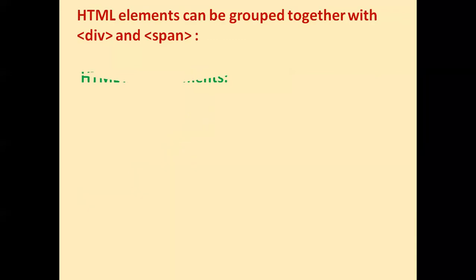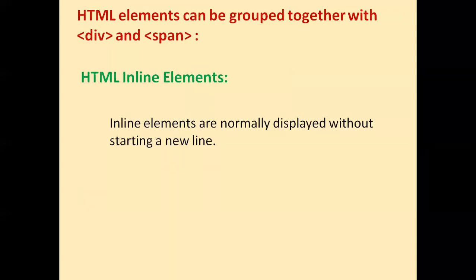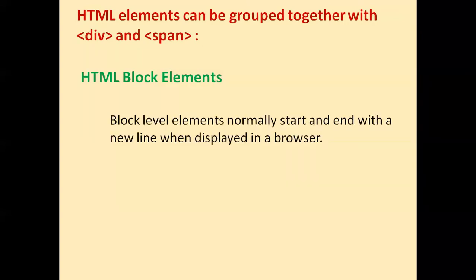So to summarize: HTML inline elements are normally displayed without starting a new line — examples are anchor tag, b tag, image tag, td tag. HTML block level elements normally start and end with a new line when displayed in a browser. That is the only difference between block level and inline elements. Span tag comes under inline elements and div tag comes under block level elements.